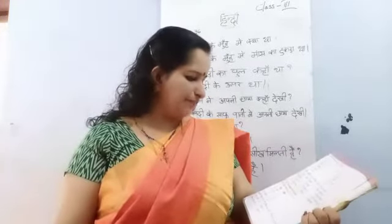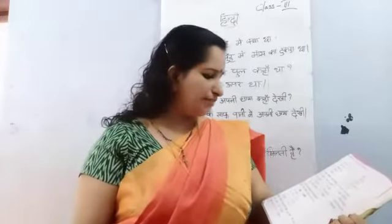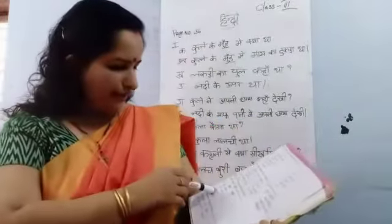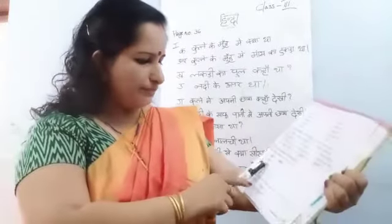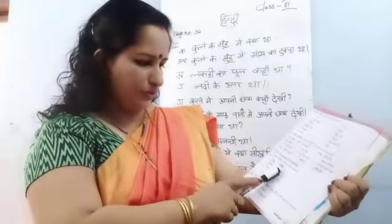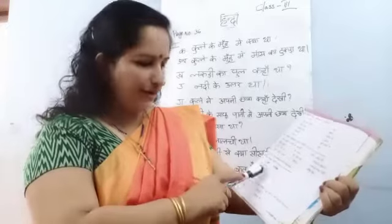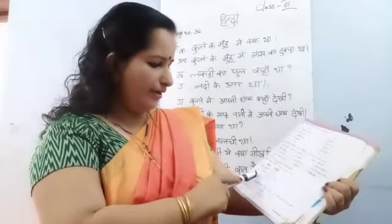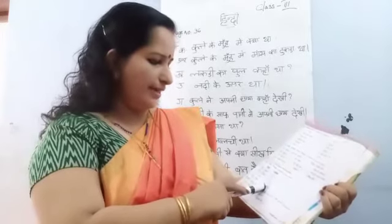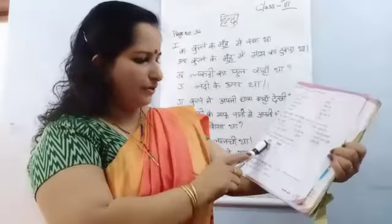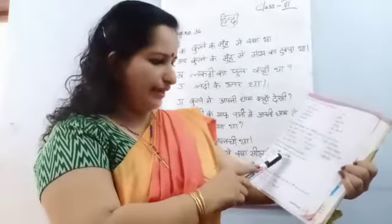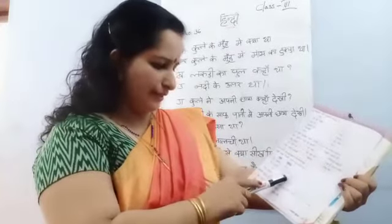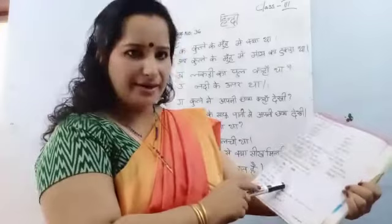Fifth question — sahi shabd lakhe. Choose the correct word form: Kutta or Kutte, Tukda or Tukde, Nadhi or Nadia, Raasta or Raaste. Kutta, Kutte, Tukda, Tukde, Nadhi, Nadia, Raasta, Raaste.